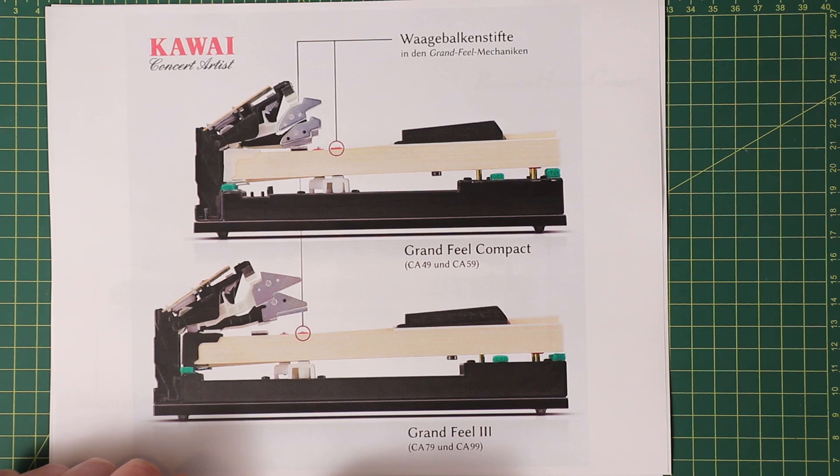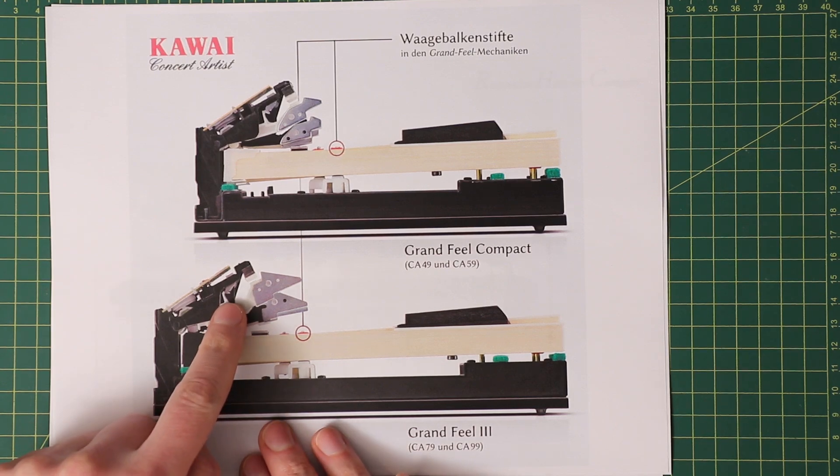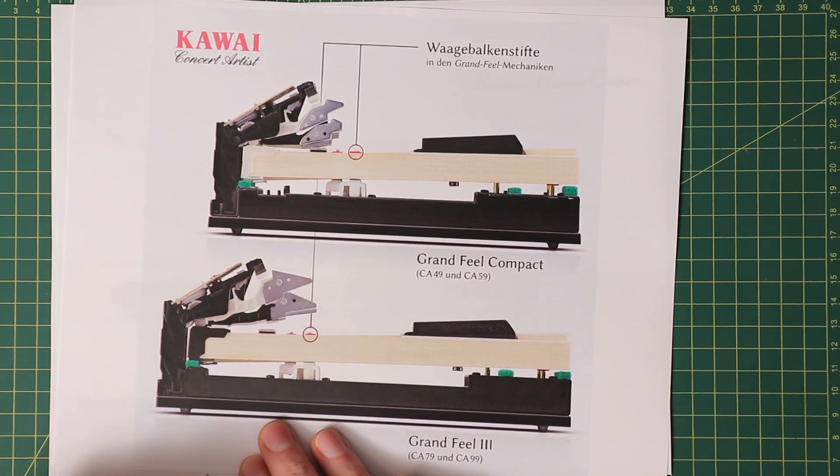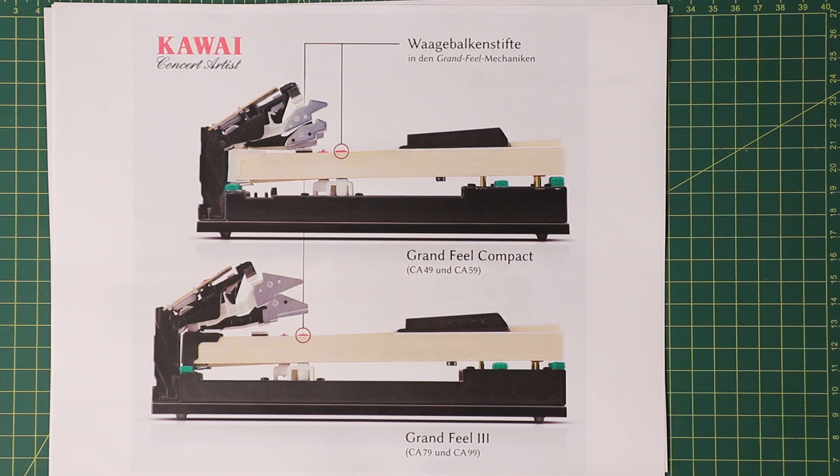Personally, that just seems like a marketing gimmick considering that the part of the key that you actually feel is the fake ivory overlay. The biggest change to the feel of the action is actually the addition of this little rubber piece that get flicked as you press the key that simulates what a player would feel on an actual acoustic piano with the repetition escapement triggering.